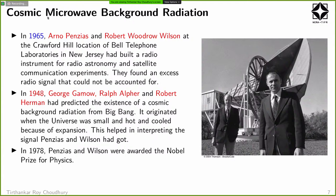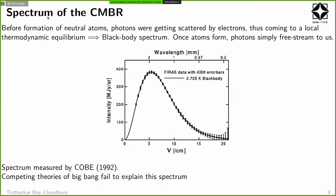In 1978, Penzias and Wilson were awarded the Nobel Prize for this discovery. It's not just the radiation itself — before the atoms formed, the radiation was scattering off free charges and would achieve thermodynamic equilibrium. Hence the spectrum of that radiation will be a perfect black body. So if you detect this radiation, you expect it to be a black body — this is a prediction from the Big Bang model.